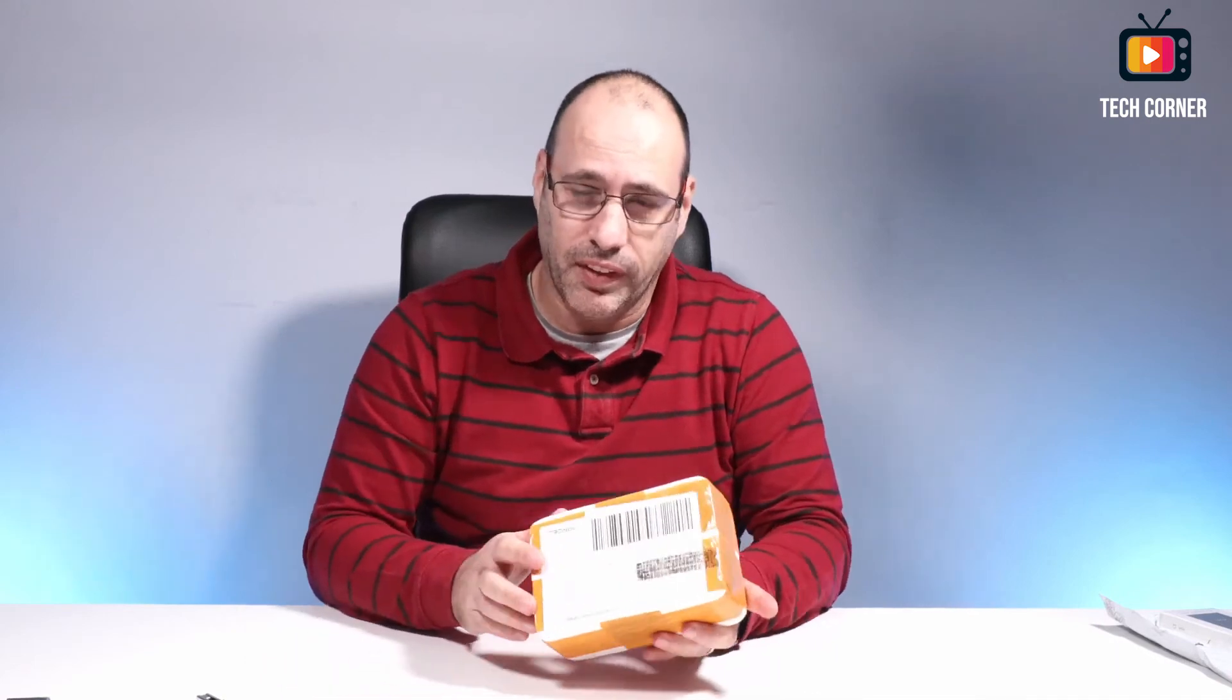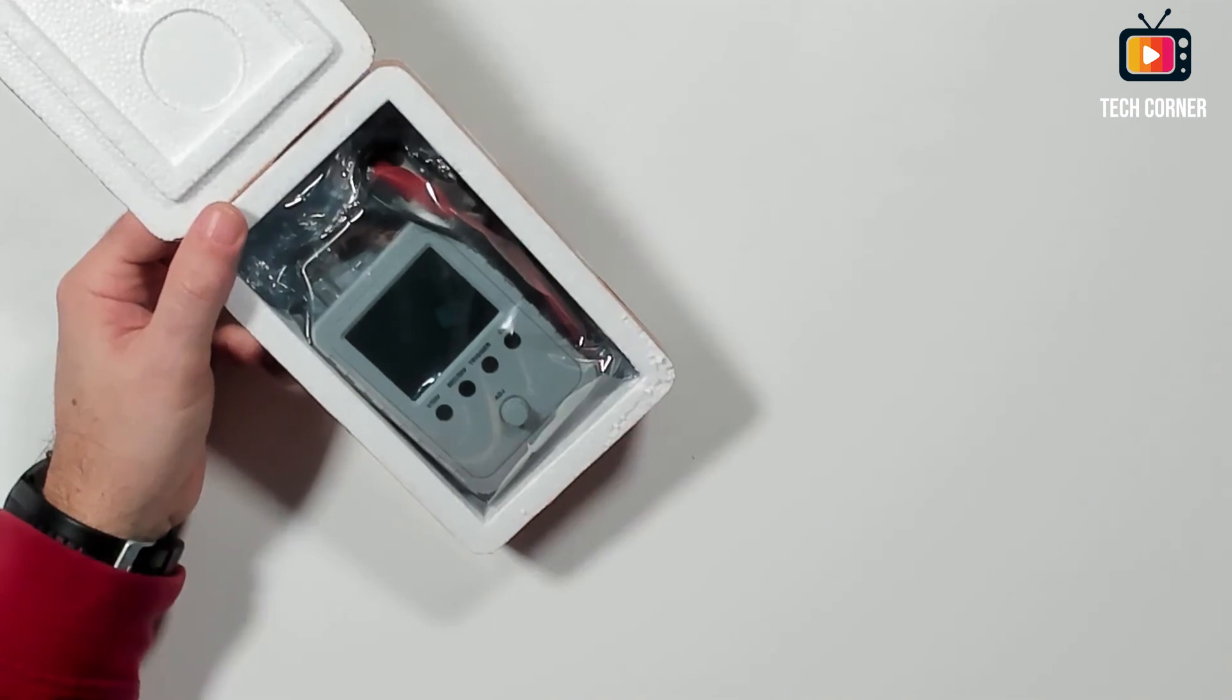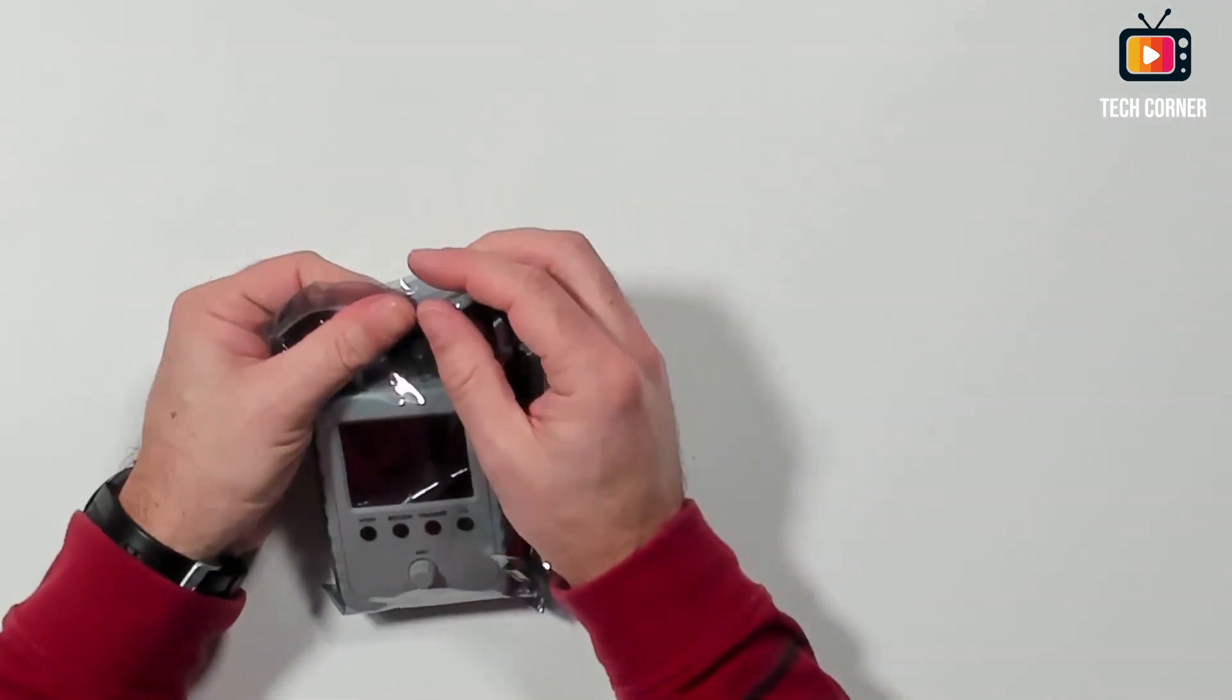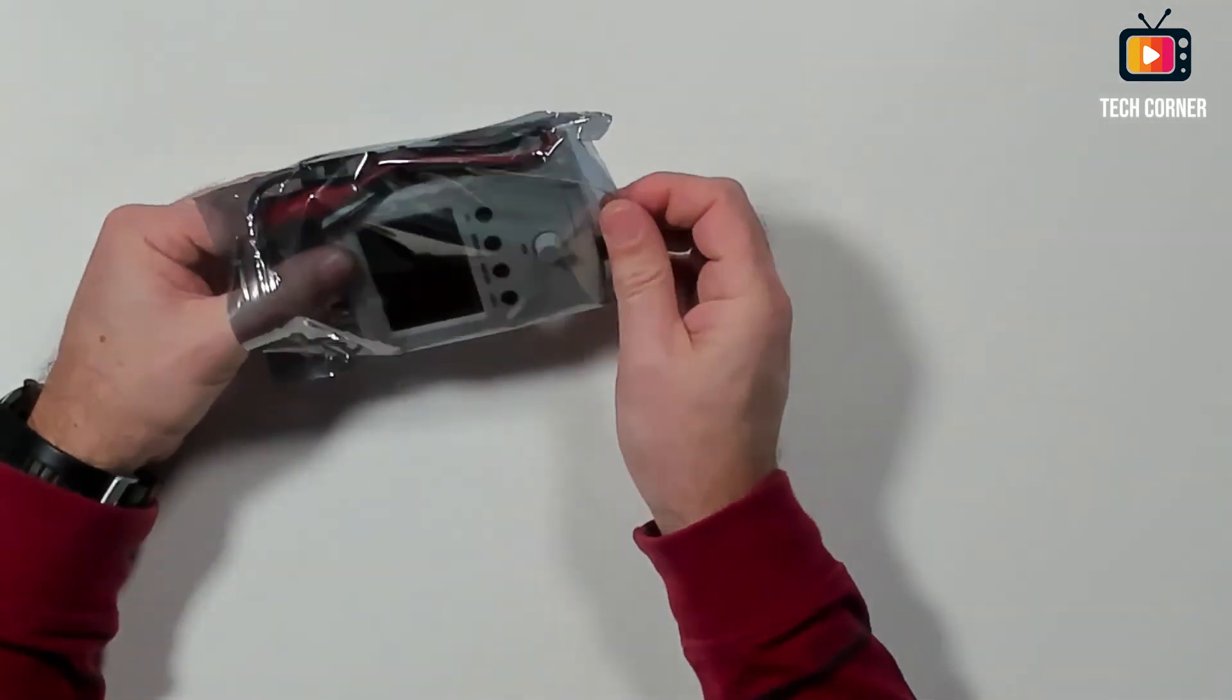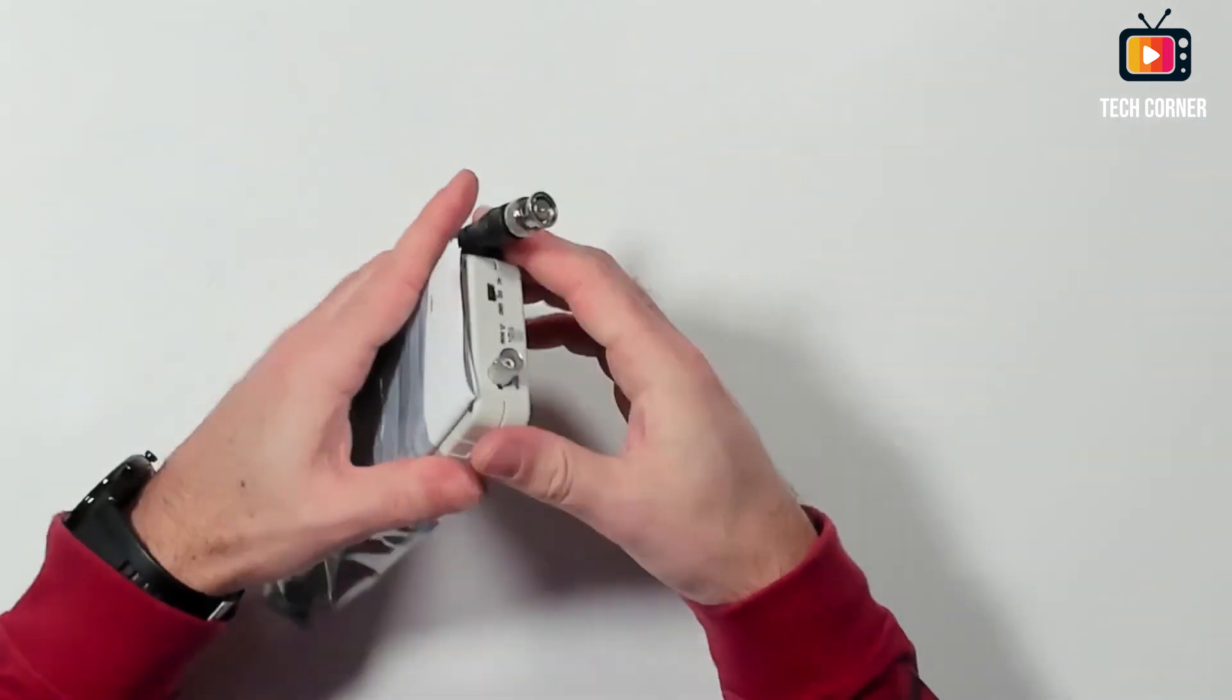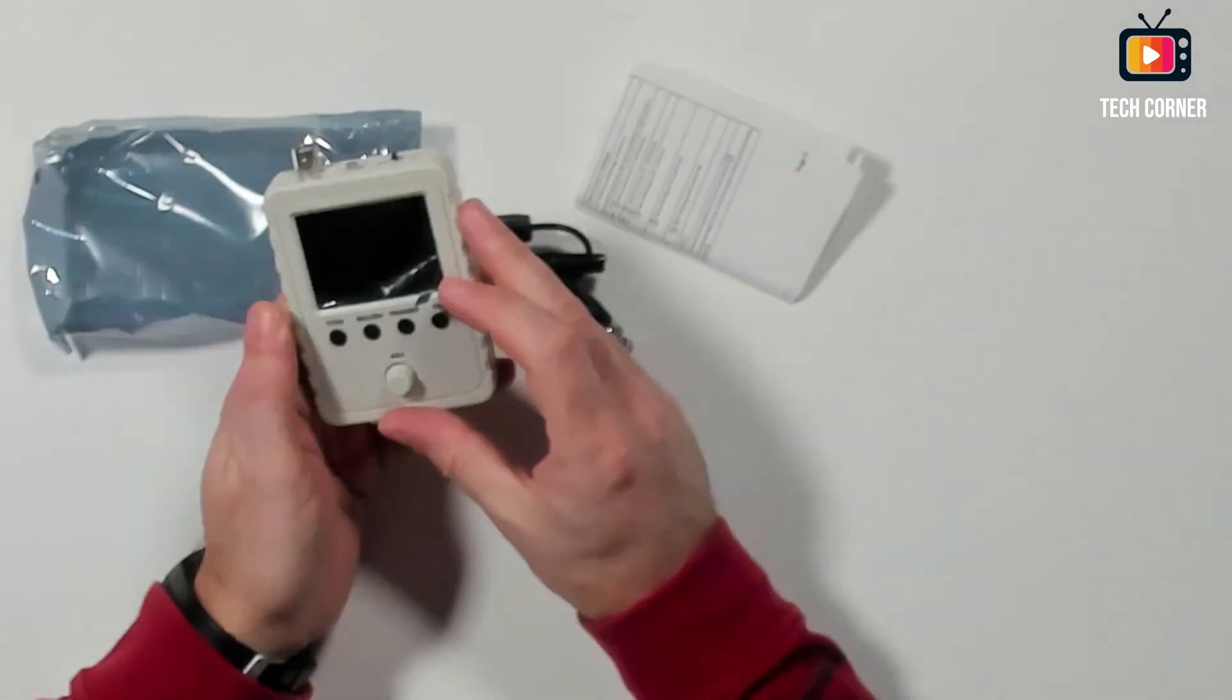So then the last one. And okay. So this one I already know what it is. Okay. So we have here a small oscilloscope. I already have one. I just want... I bought this one because... Okay, come on. Well, I want to do a review on this product.